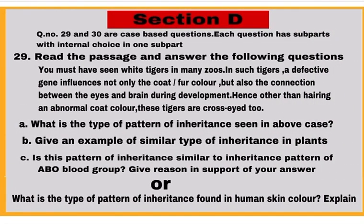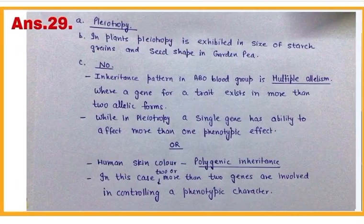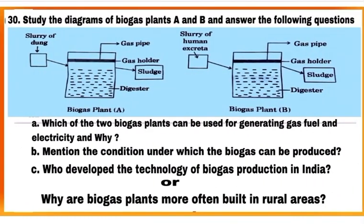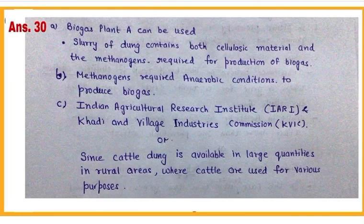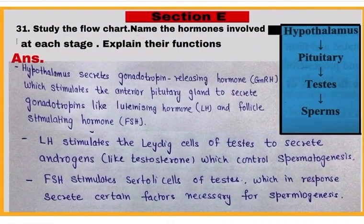In Section D, question numbers 29 and 30 are case-based questions of 4 marks each. Each question has sub-parts with internal choice in one part. Here are the answers of question number 29, and answers of question number 30.